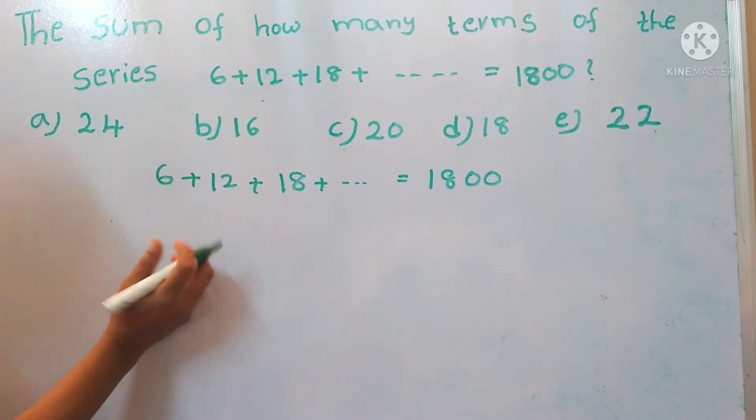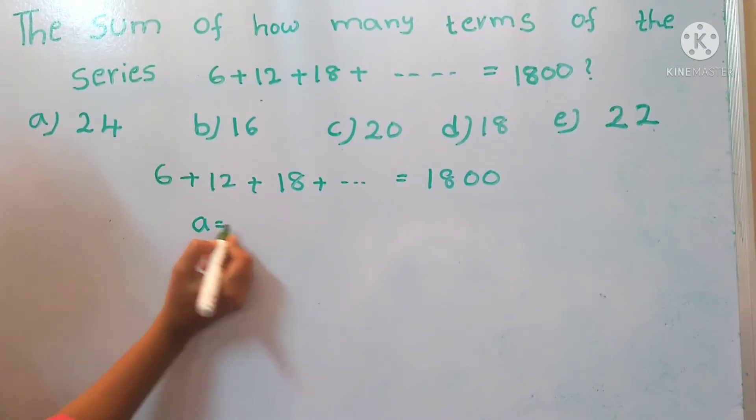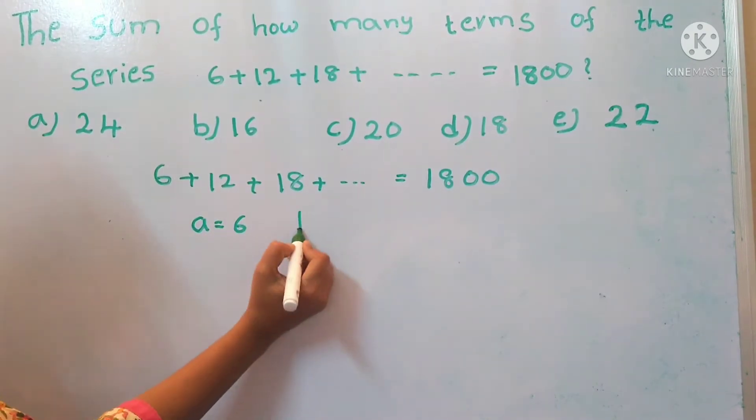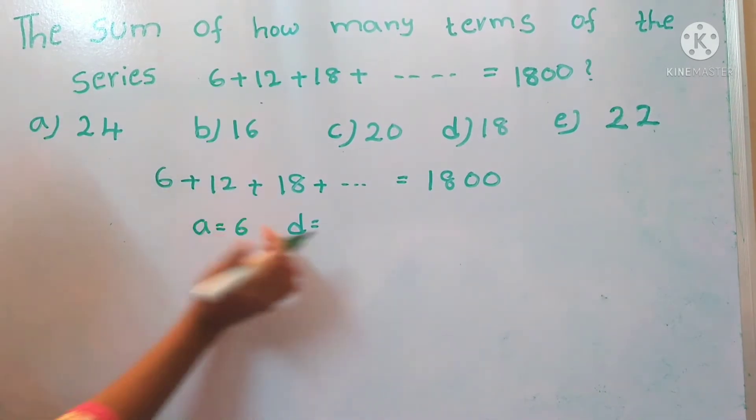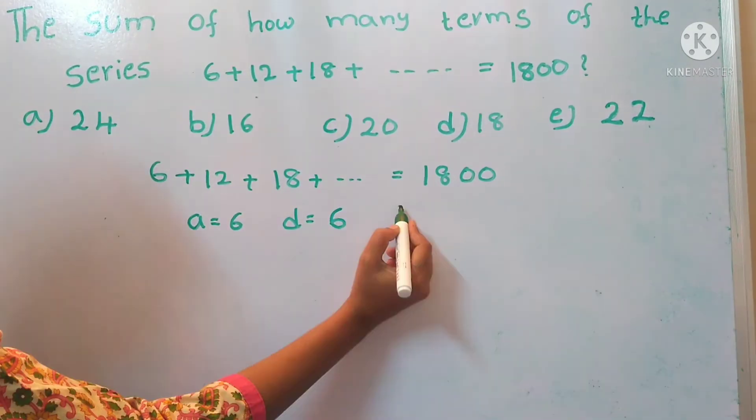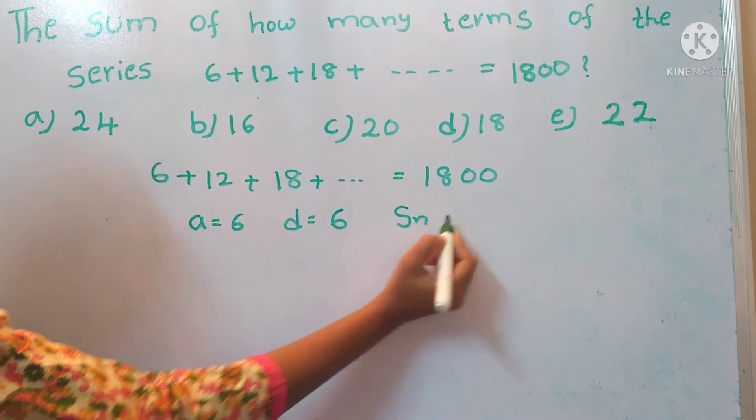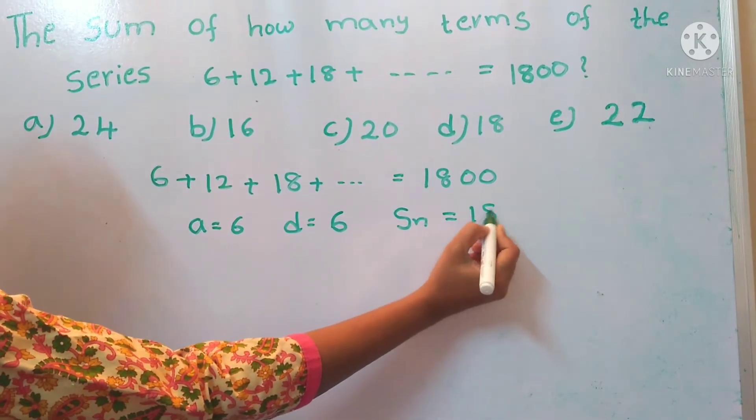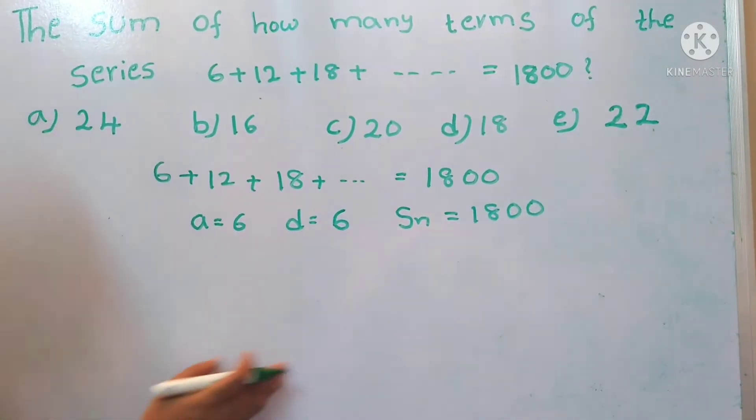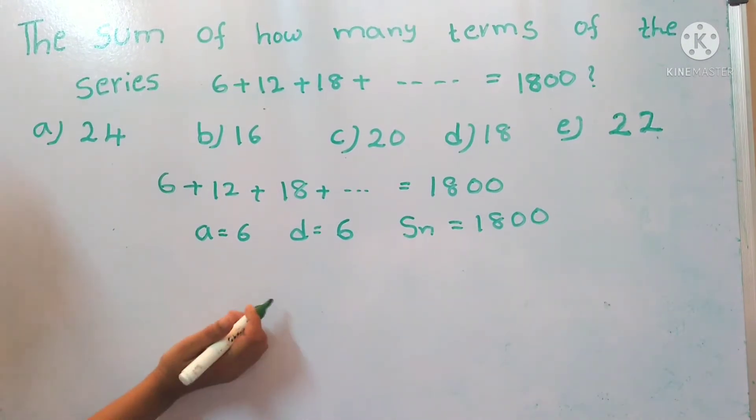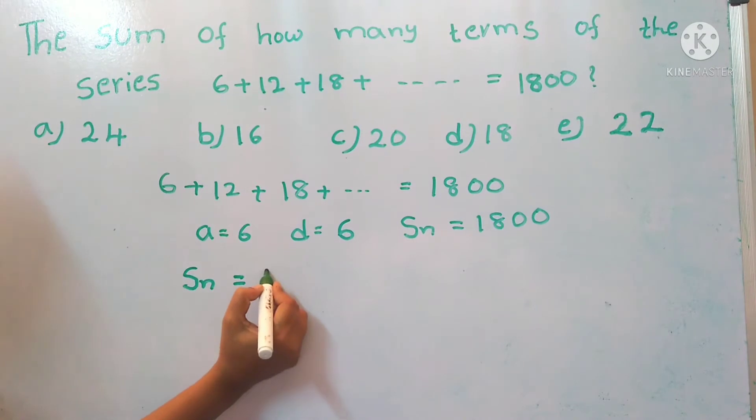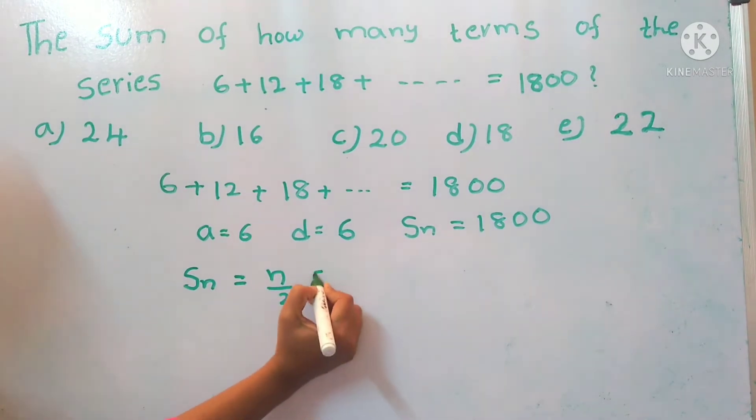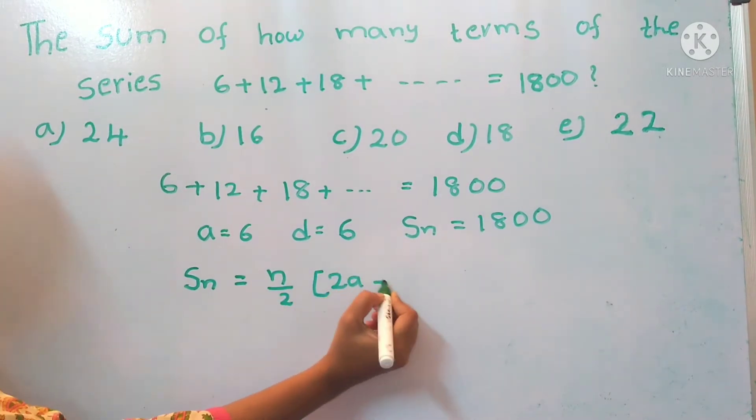Now here, the first term a equals 6, and the difference d equals 12 minus 6, which is 6. The sum of the numbers equals 1800. Since this series is in arithmetic progression, we have a formula: sum of the numbers equals n/2 into 2a plus (n-1) into d.